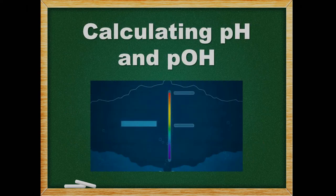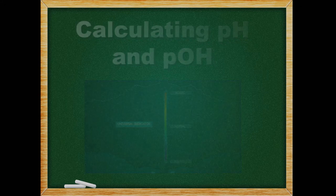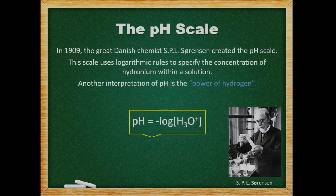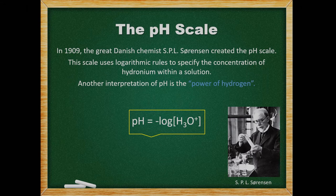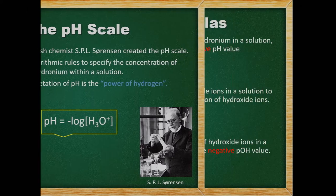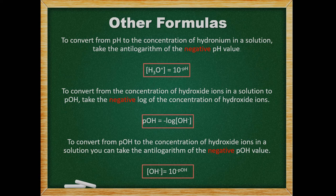Calculating pH and pOH. In 1909, the Danish chemist S.P.L. Sorensen created the pH scale. This scale uses logarithmic rules to specify the concentration of hydronium within a solution. Another interpretation of pH is the power of hydrogen. We define pH as the negative log of the molar concentration of hydronium ions. To convert from pH to the concentration of hydronium in a solution, we can take the antilogarithm of the negative pH value.